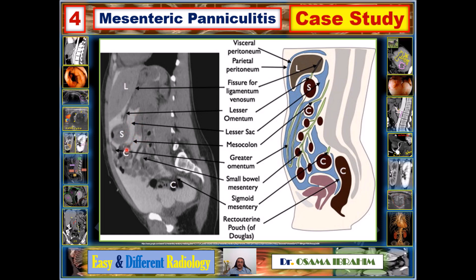The posterior boundary of the lesser sac is the transverse mesocolon. Anteriorly is the greater omentum. The small bowel is surrounded by mesentery, as is the sigmoid colon. The Douglas pouch lies between the uterus and the colon.